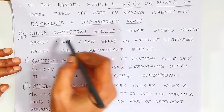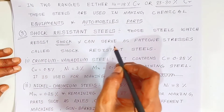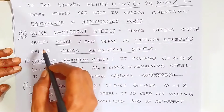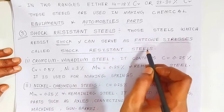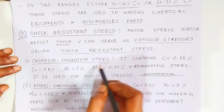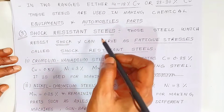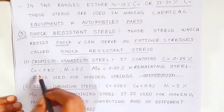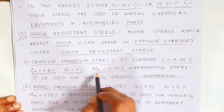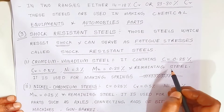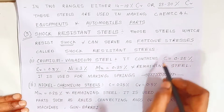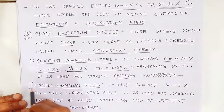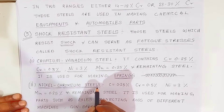The third type is shock resistance steel. These are steels which resist shock and fatigue stresses. Shock resistance steels are further classified. First is chromium vanadium steel, which contains 0.25% carbon, 0.5% chromium, 3% nickel, 0.25% manganese, and the remaining steel. It is mostly used in springs.